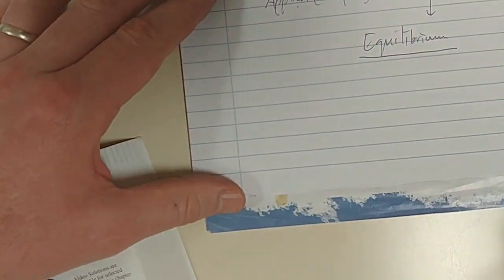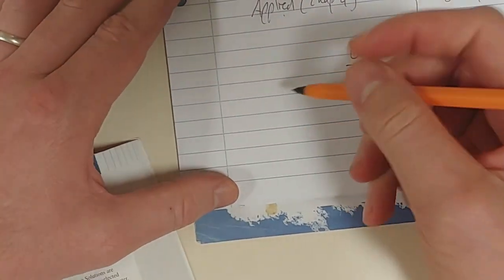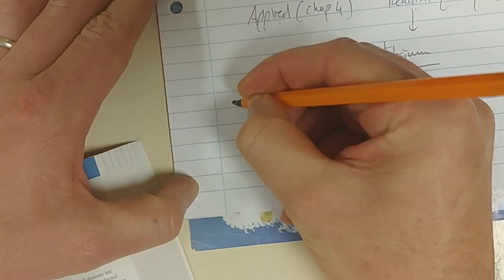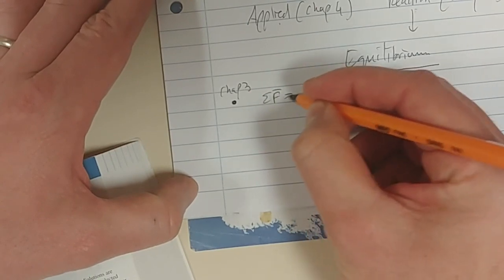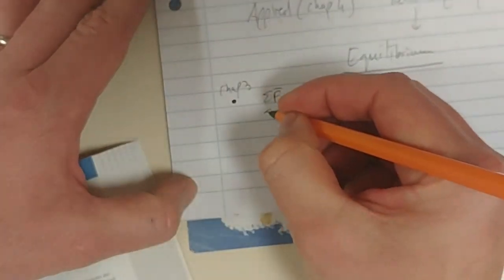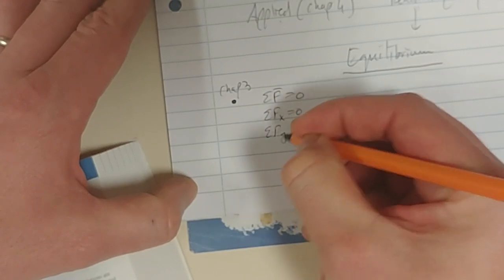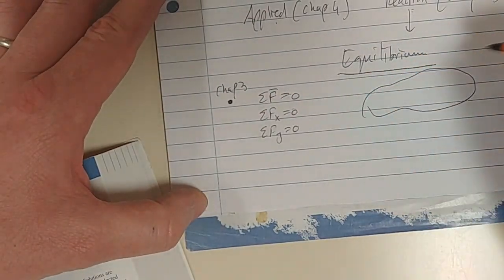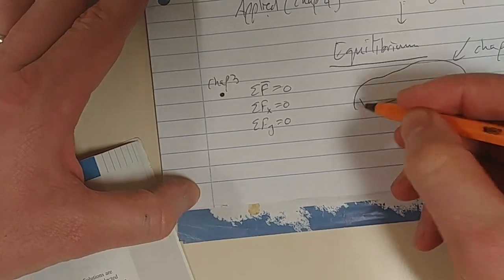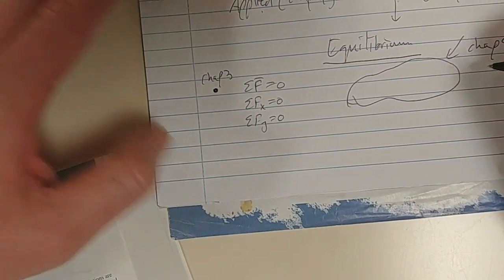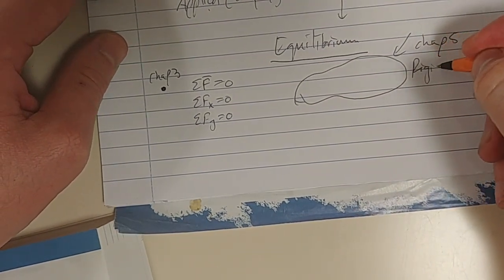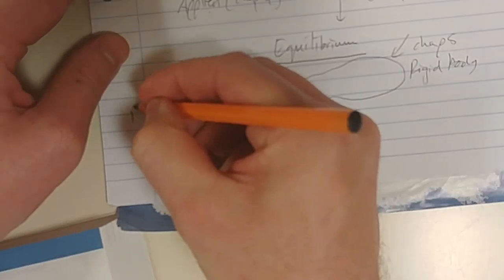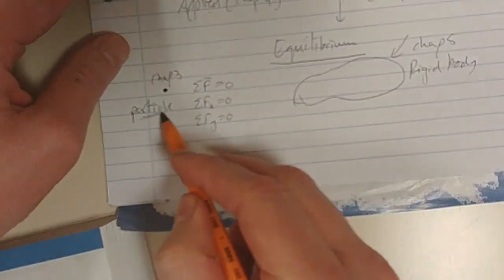So now, what for a rigid particle, for a particle, do you recall, for a particle, that's Chapter 3, what do we need for equilibrium? We just need the sum of the forces equal to zero, which means the sum of the forces in the X equals zero, sum of the forces in the Y equals zero. But for a rigid body, this is Chapter 5, for rigid body equilibrium. This is particle, particle equilibrium, it's just a particle.